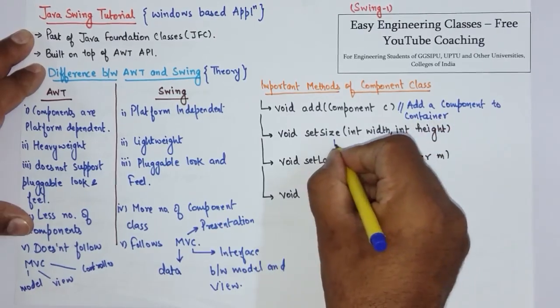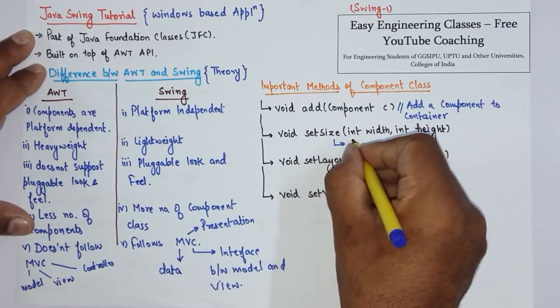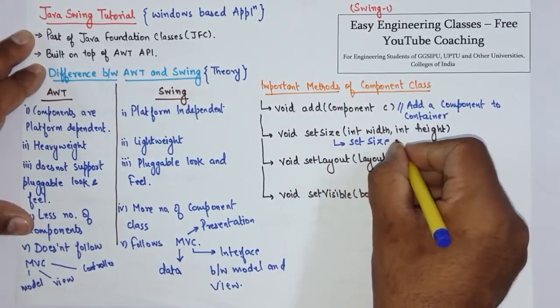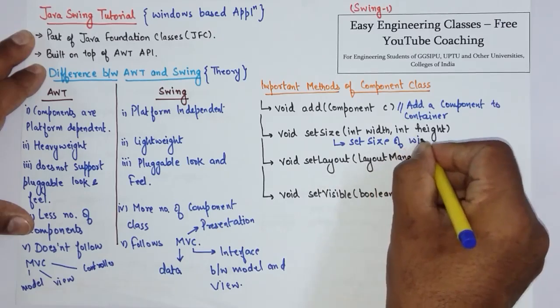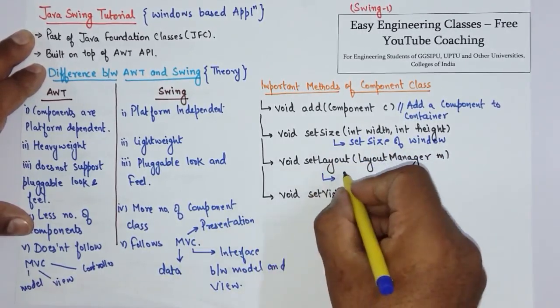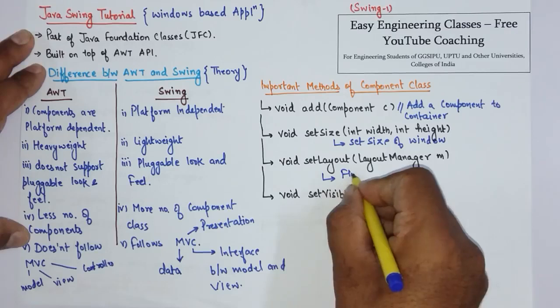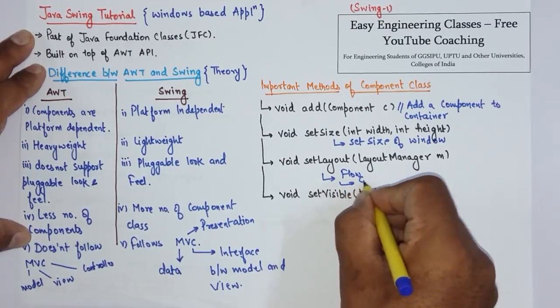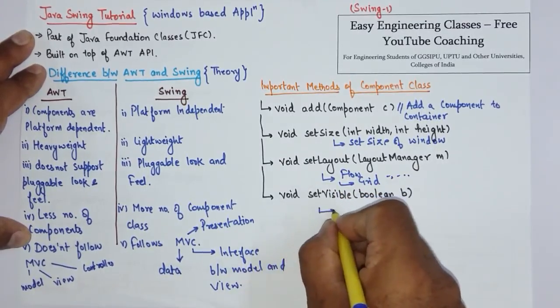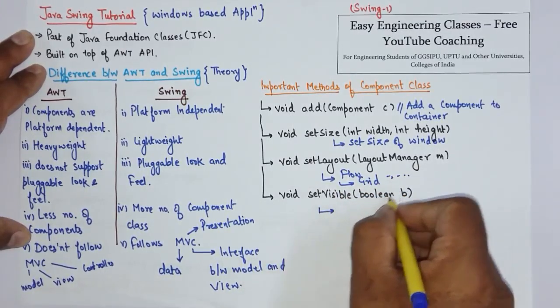Then setSize is used to set the size of the container in width and height, or set size of window in simple terms. SetLayout is used to set layout manager, for example you can set flow layout, grid layout, border layout, etc. And then to make the window appear you have to set visible true.